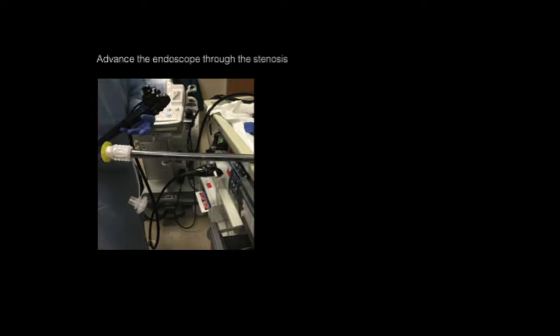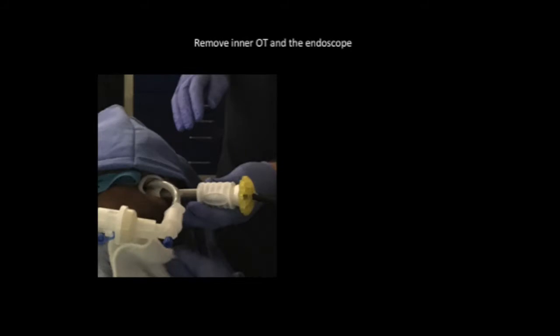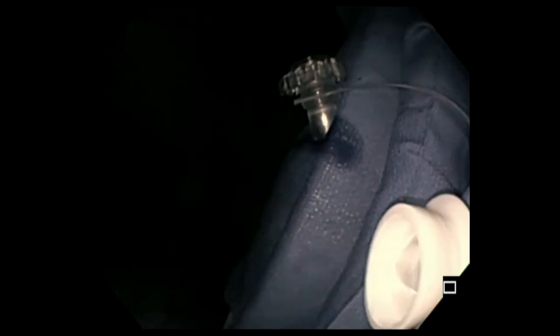D: Advance the endoscope through the stenosis. E: Advance the overtube forward over the endoscope. F: Remove the inner overtube and the endoscope. G: Finally, lock the outer tube with the feathered insufflation cap. After appropriate positioning of the overtube,